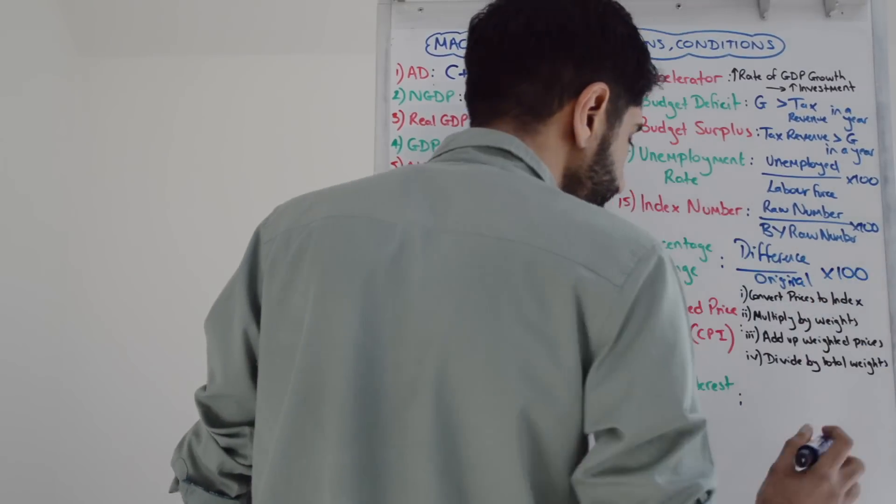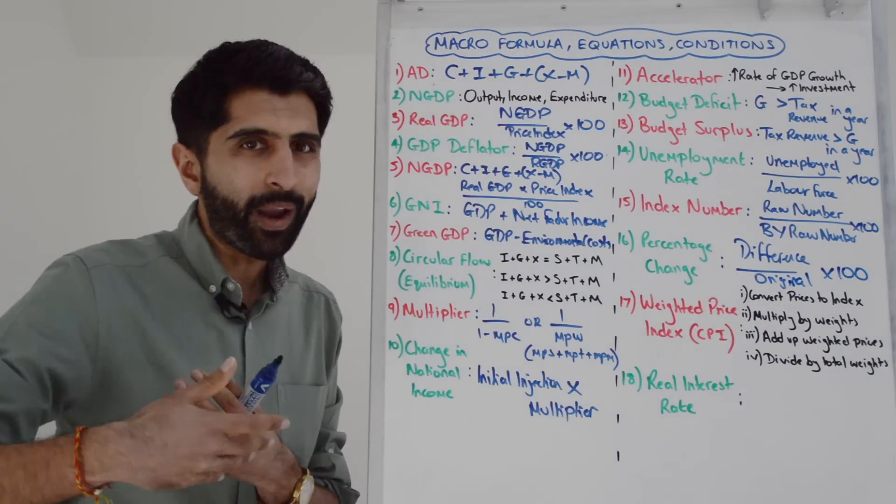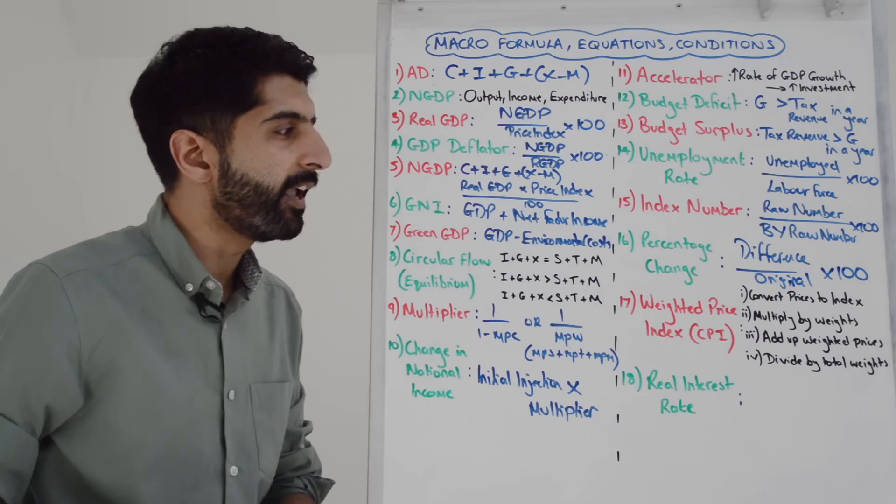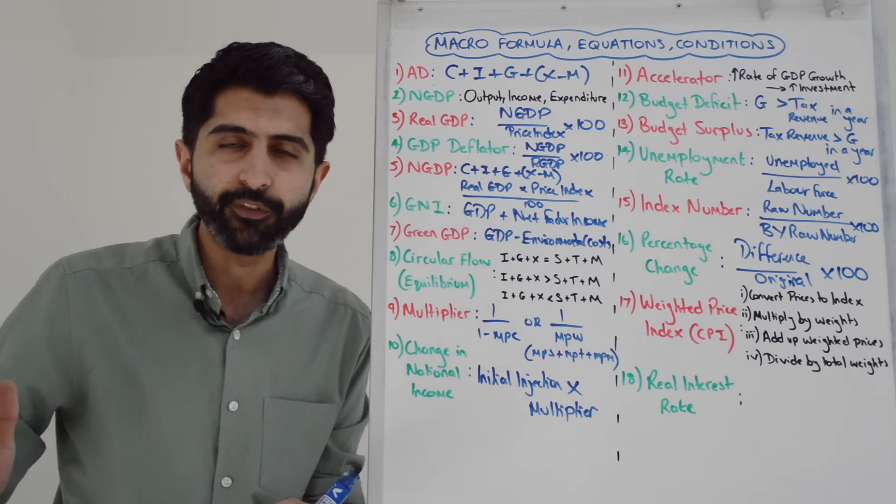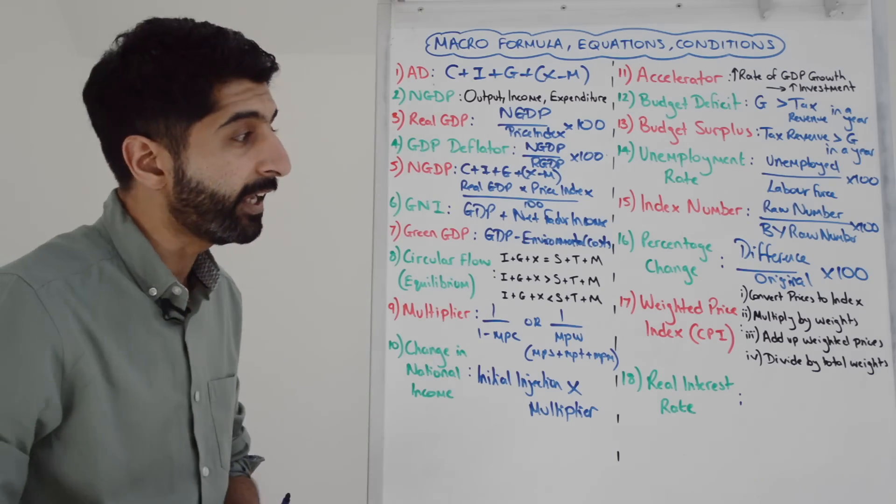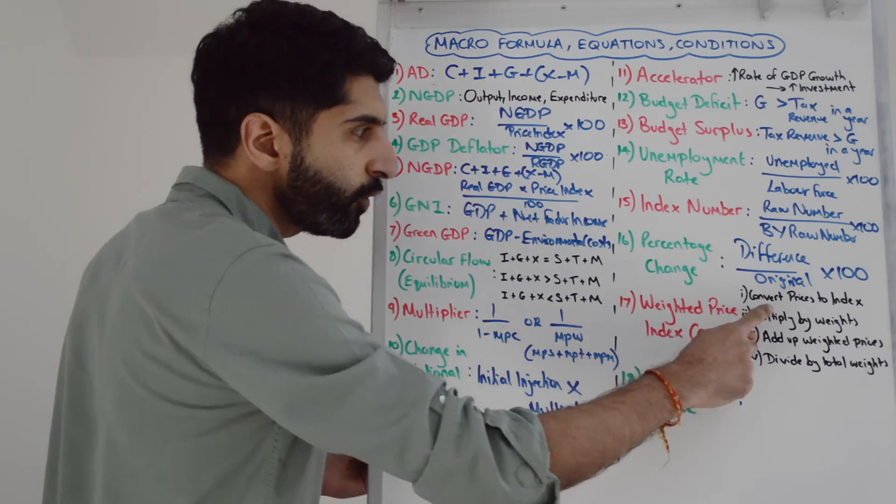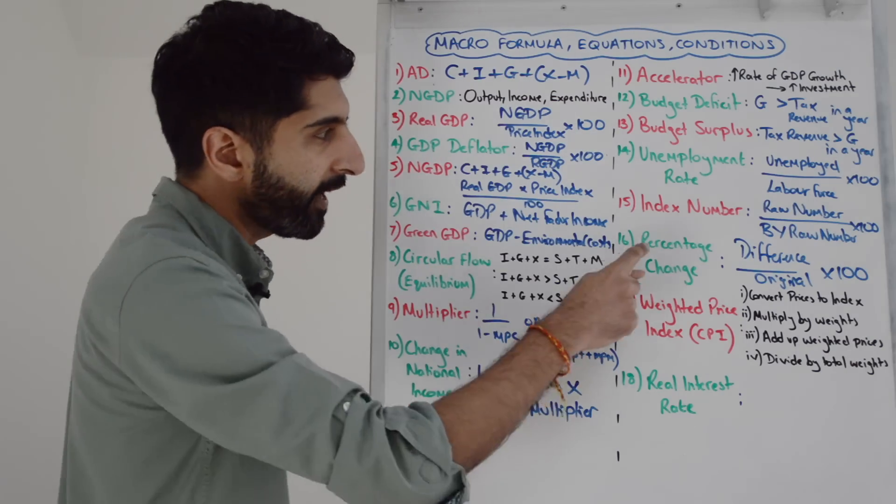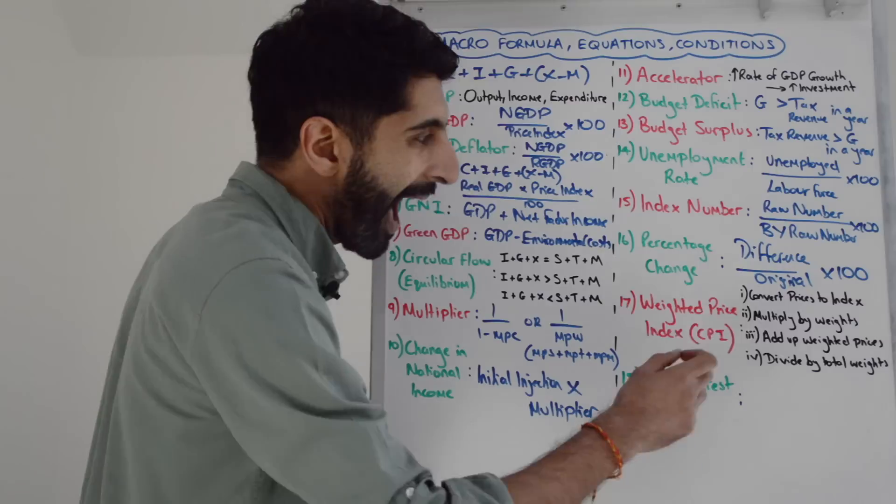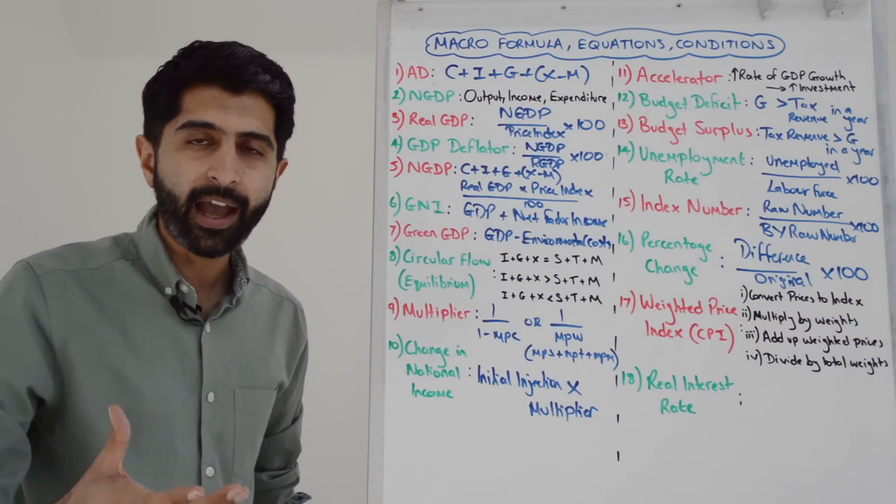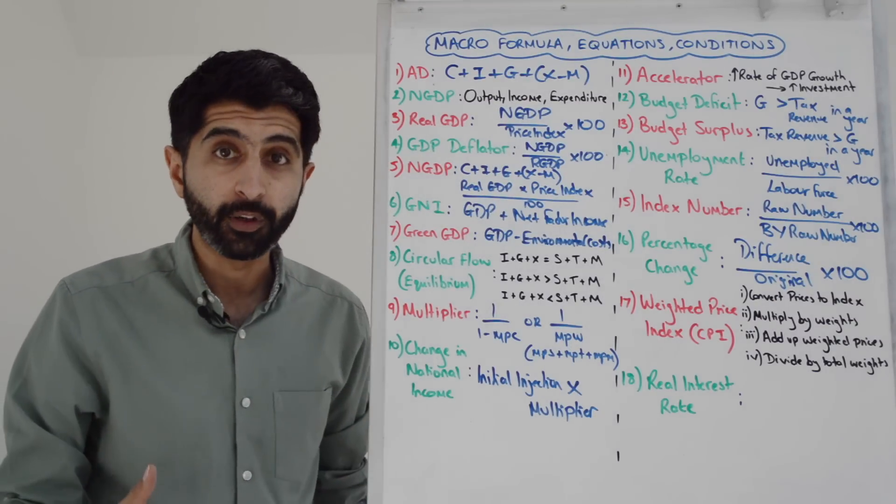To work out a weighted price index, for example a weighted CPI price index: normally you'll be given a variety of goods and services that form a basket with their prices. Convert those prices to index using the equation above, multiply those index prices by the weights, add up the weighted prices, then divide by the total number of weights.